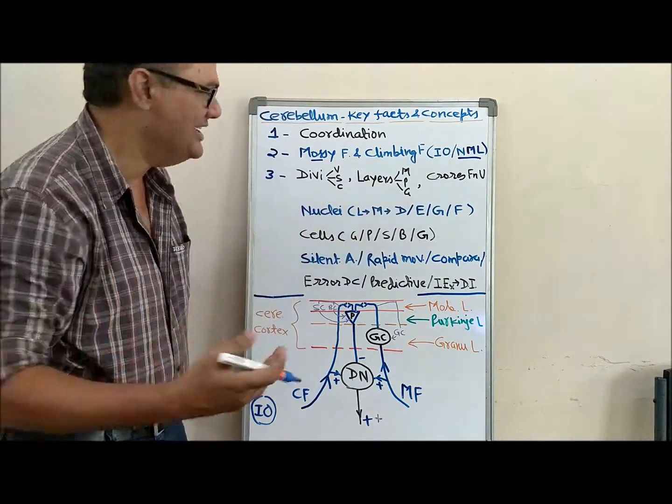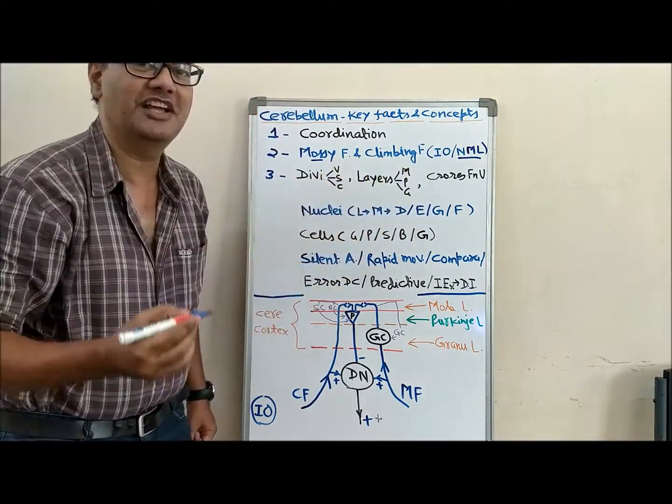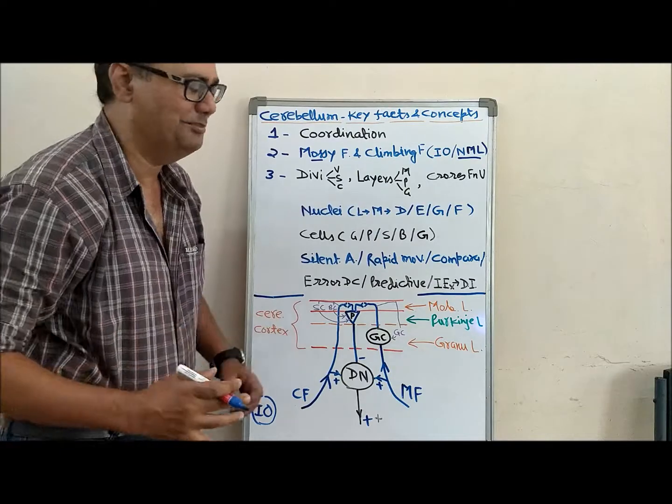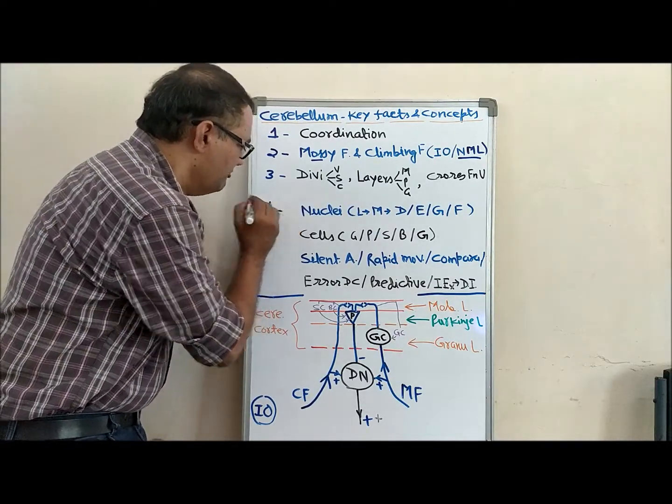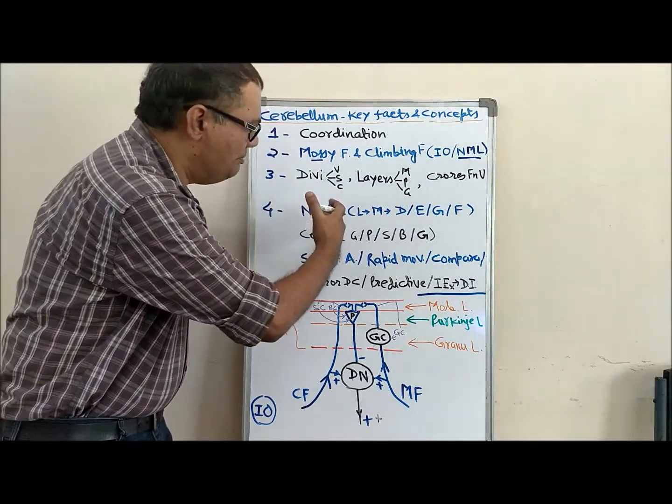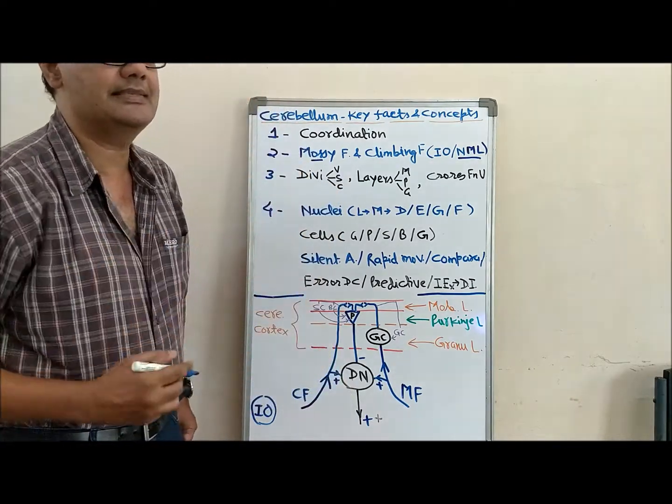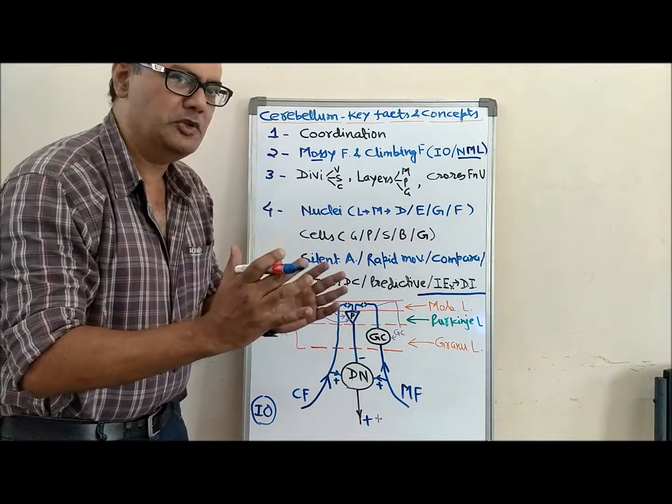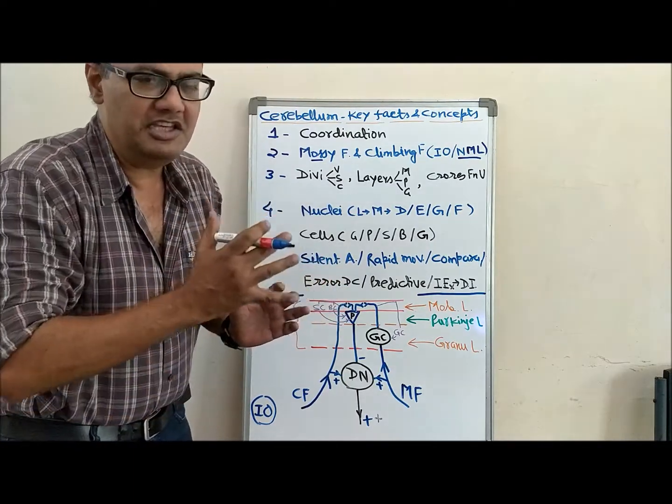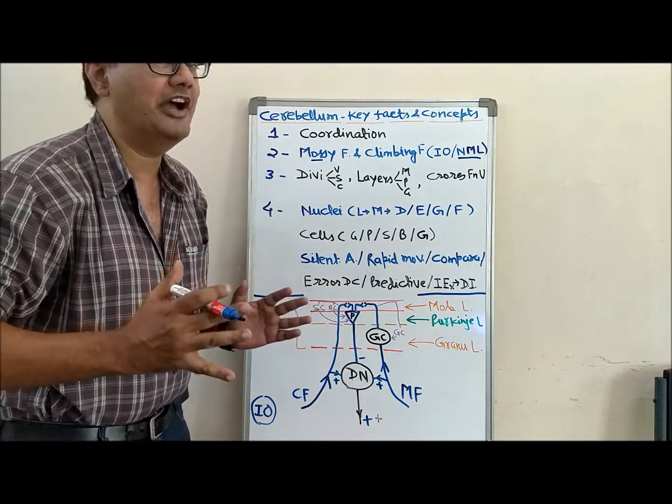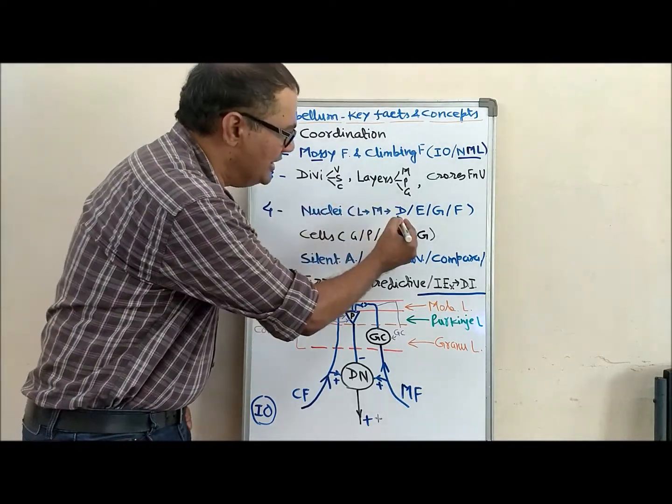From four, we have four types of deep or roof nuclei in cerebellum. From these nuclei, the efferent or outgoing fibers arise.